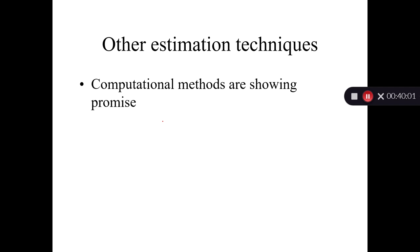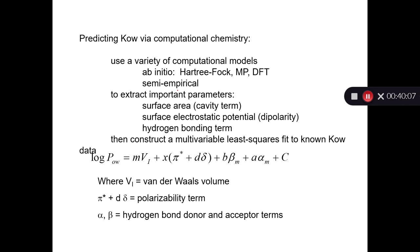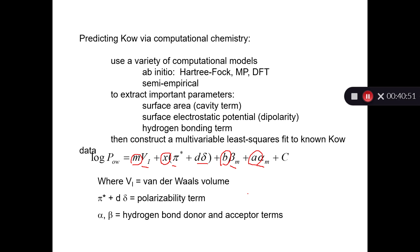There are also other computational methods that are basically like the polyparameter method, except you use computational chemistry to predict the molar volume, the pi term (another polarizability term), and the alpha and beta. You get those terms from the software — you draw a picture of your chemical, it does calculations to determine its geometry and polarity, and spits out V, pi, beta, and alpha. Then using log P instead of log KOW, you do a big multiple linear regression to determine the coefficients. I think we're going to see more of this in the future, but for now we're mostly using bond contribution methods or the polyparameter method.